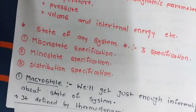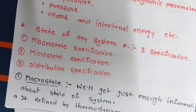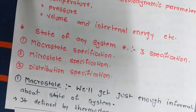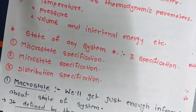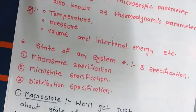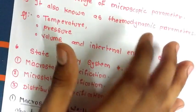In macrostate, we will get just enough information about the system, not in detail. It is basically defined by the thermodynamic variables — as we see in macroscopic parameters, it deals with volume, temperature, pressure, etc. These thermodynamic variables are dependent on each other.